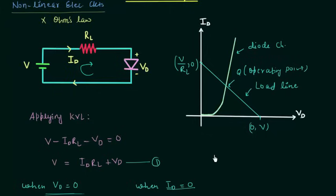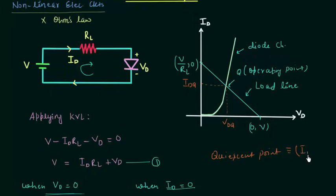The operating point is also called the quiescent point, or Q point. It is defined by the operating voltage VDQ and the operating current IDQ. The operating point is the intersection of the load line and the diode characteristics. We can easily find the load line using Kirchhoff's voltage law.